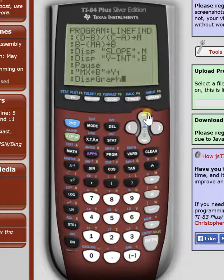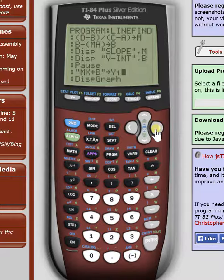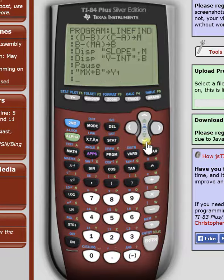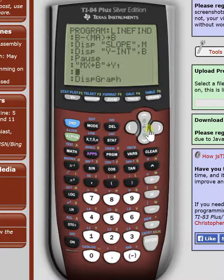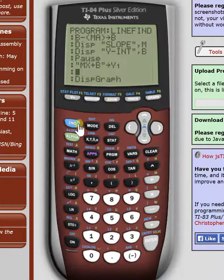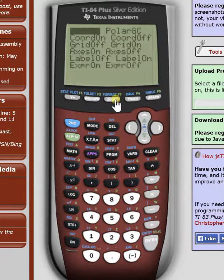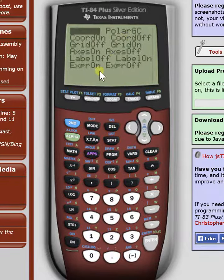And you know what would probably be helpful is if we added a line. Go to the end here. Second, delete is insert. Enter. There you go. Insert a line. We're going to clear all the other stuff that might be in your graphing thing. So, we're going to turn off.